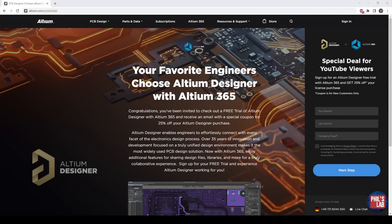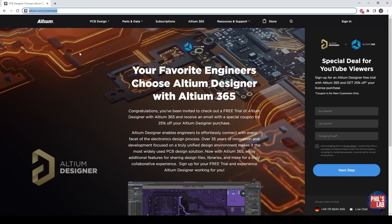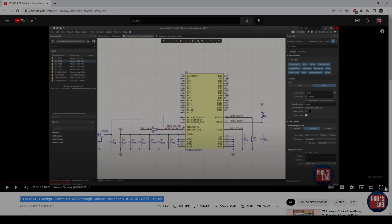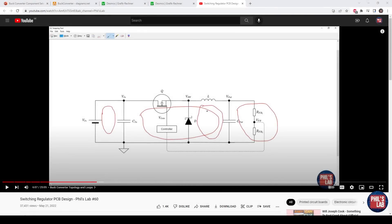Thank you very much to Altium for sponsoring this video. If you'd like to give Altium Designer a try for yourself, you can go to altium.com/YT/PhilzLab to get yourself an Altium Designer free trial, as well as 25% off your first license purchase. To get you started with Altium Designer, I have a fairly complete walkthrough just under three hours on my channel called STM32 PCB design with Altium Designer. If you haven't seen the video already, I highly recommend watching the switching regulator PCB design video, which is number 60 on my channel. This guides you through the PCB design and layout aspects of switching regulators, as well as giving you more of the theory.